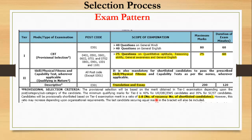Those who pass Tier 1 will be eligible for Tier 2, where the skill set mentioned in requirements — such as typing speed or physical fitness — will be tested. This differs for different posts, so read the advertisement thoroughly. Additionally, for Junior Translation Officer only, there will be a translation and essay test of 200 marks with a duration of two hours. Physical fitness and necessary skill sets are required for the other posts.